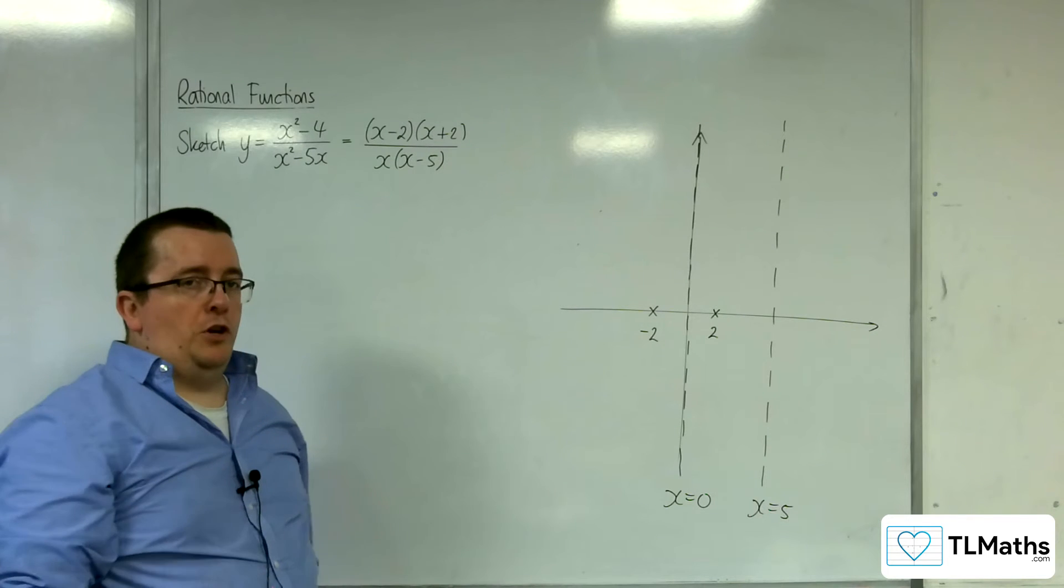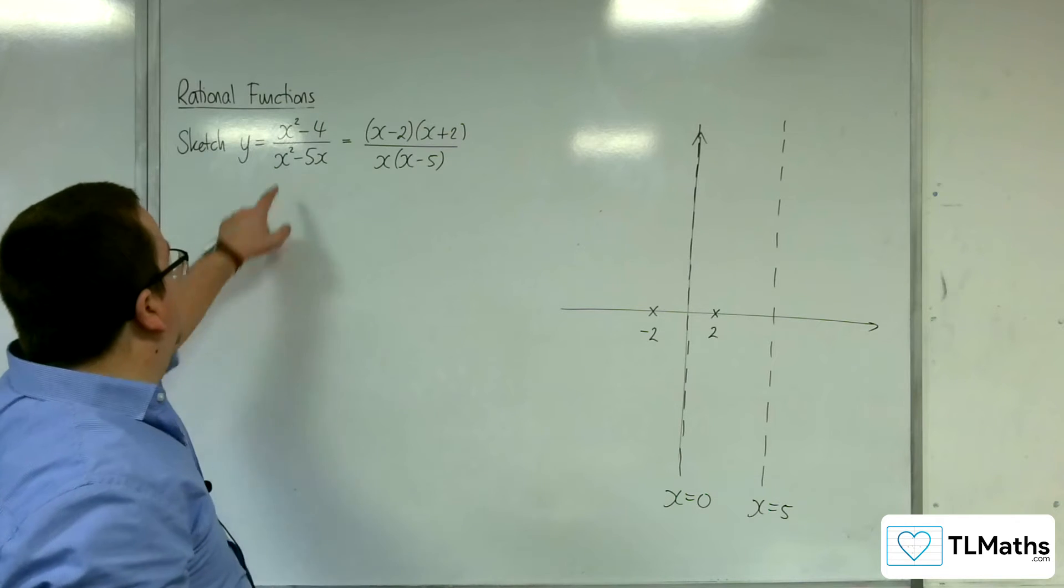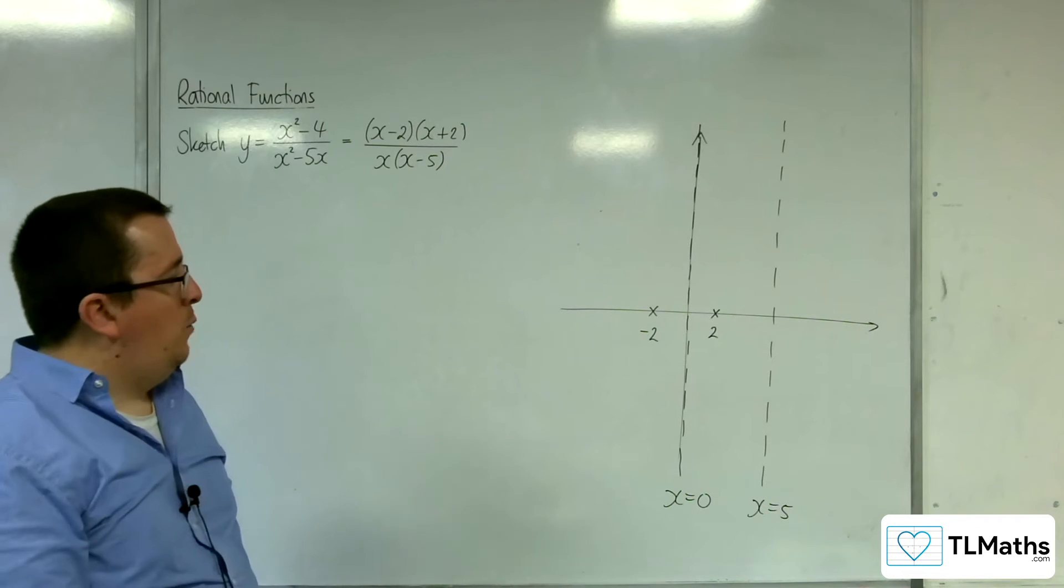Now obviously it's not going to cross the y-axis, because when x is 0, the denominator is 0. So we're not crossing the y-axis.